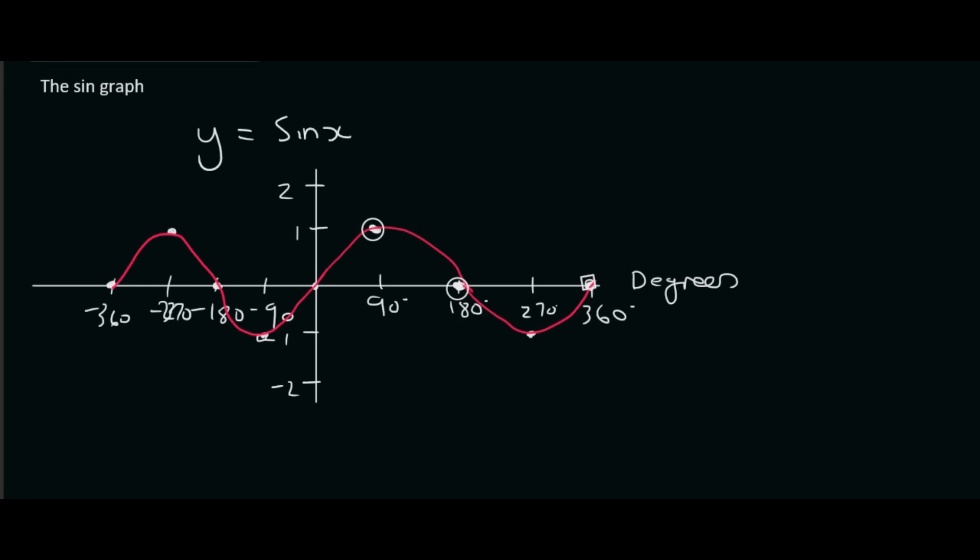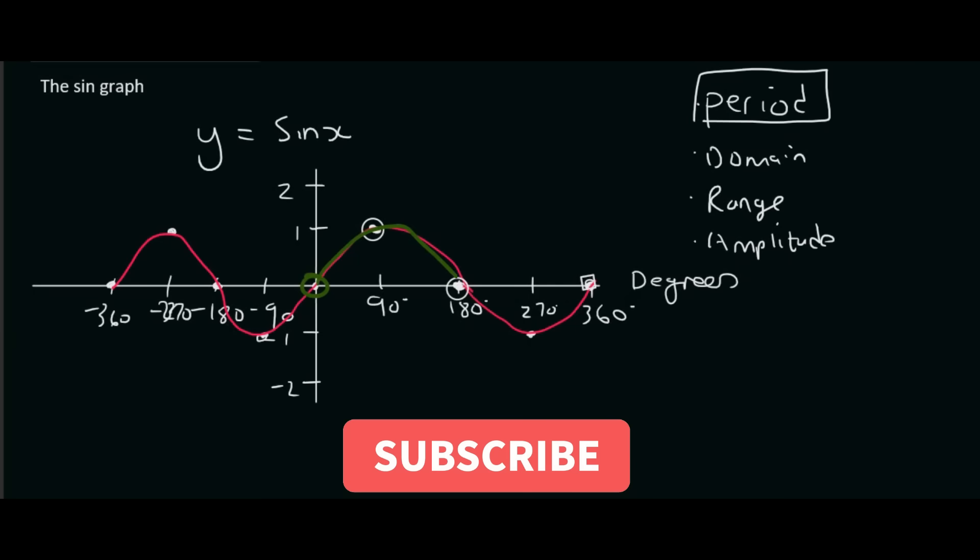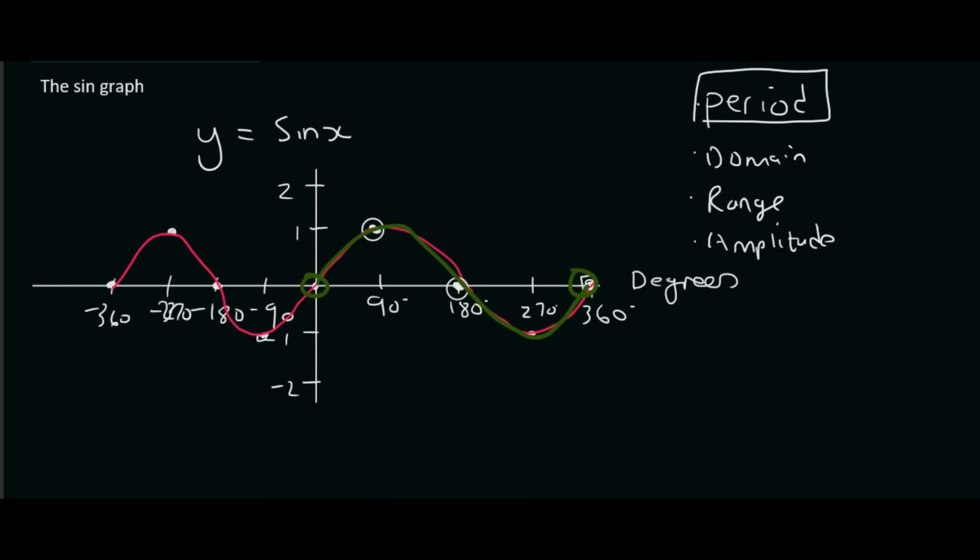But what I want to do now is speak to you about some important concepts, such as the period, the domain, the range, and the amplitude. The period is how long does it take for the graph to repeat. So we can see that this sine graph starts over here, and it repeats one full cycle up to that point. And so it takes 360 degrees to repeat. For grade 10, you must just memorize that. Only in grade 11 do they start changing that. But for grade 10, the period is the distance that it takes to repeat one cycle. That will always be 360 degrees.